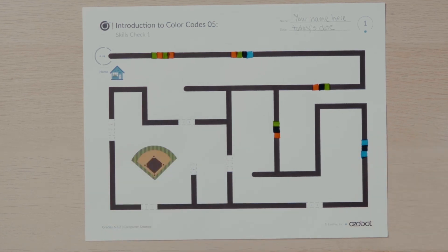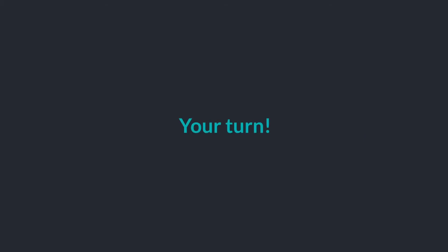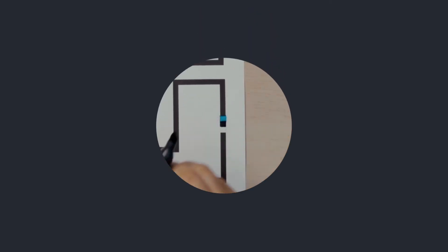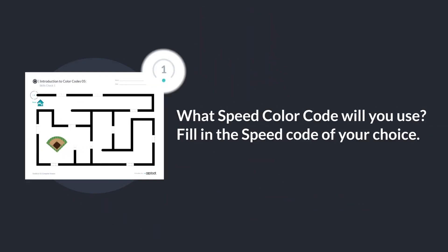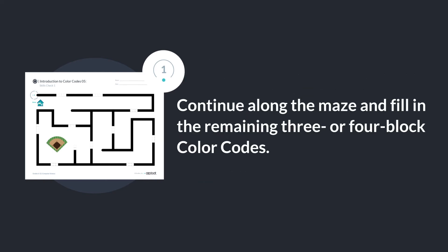Now it's your turn to figure out the rest of the maze. As a hint, you'll use four more direction at intersection codes, one more speed code, and one spin or tornado code to get to the baseball game. What speed color code will you use? Fill in the speed code of your choice. Continue along the maze and fill in the remaining three or four block color codes.